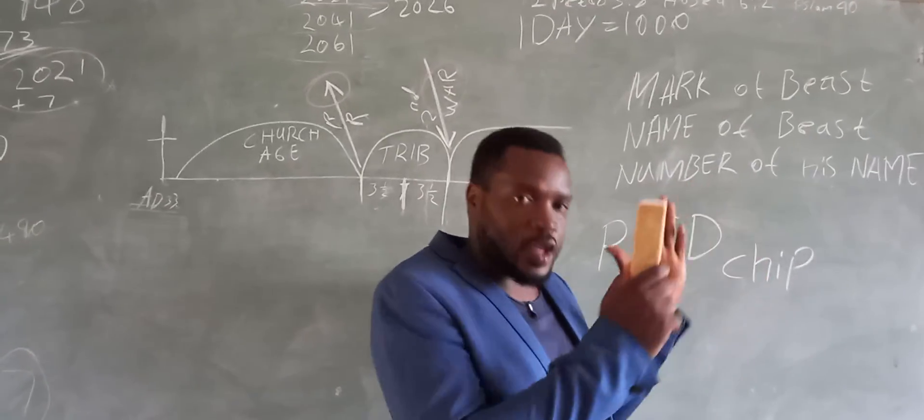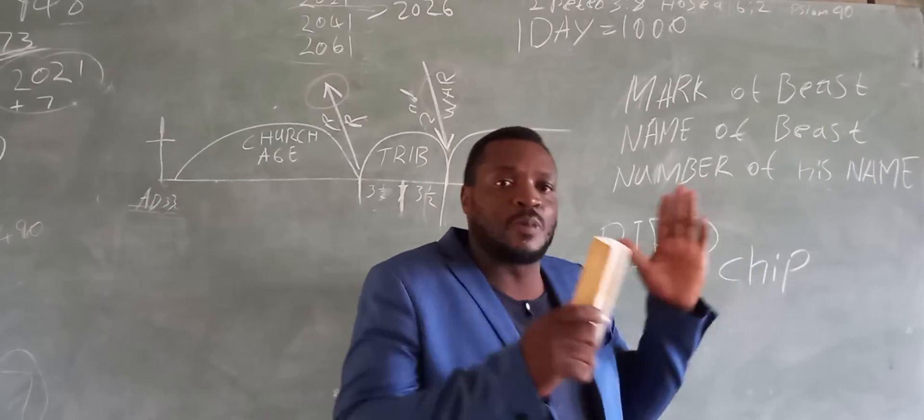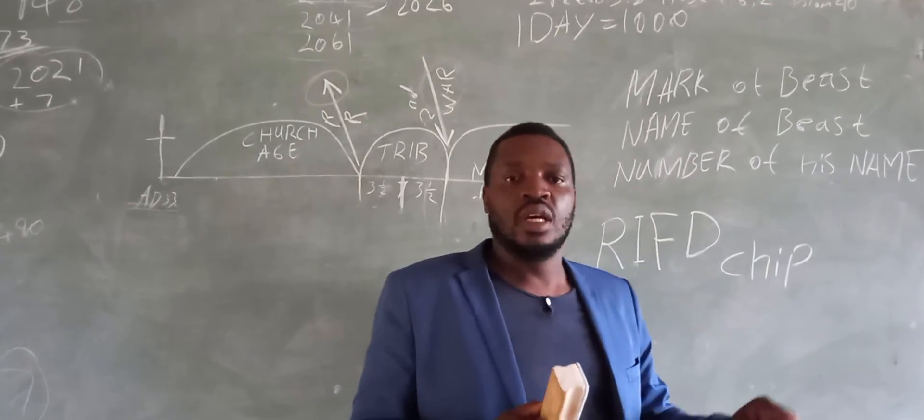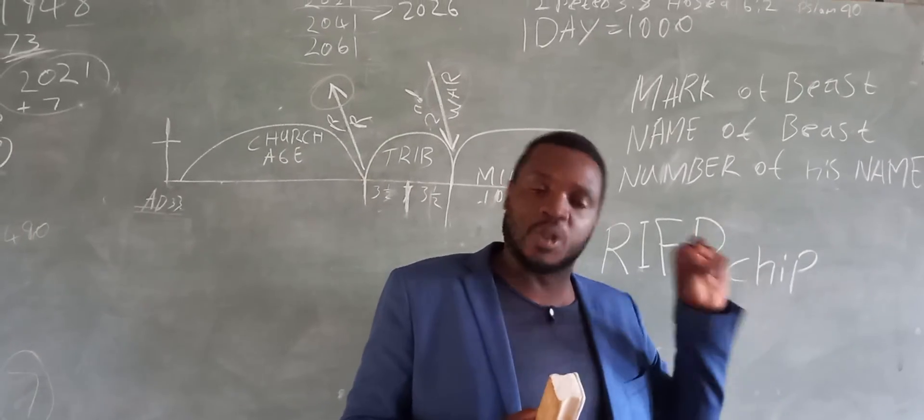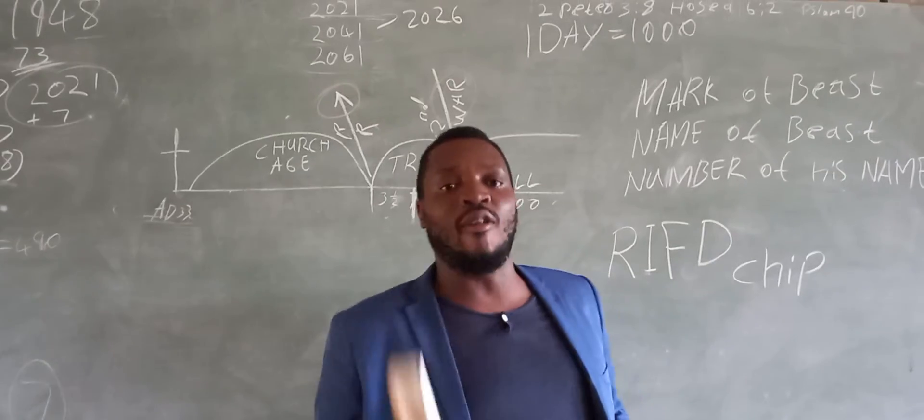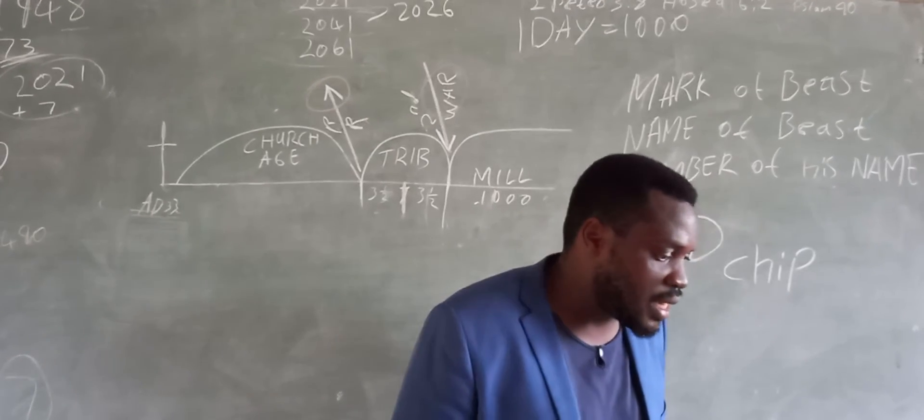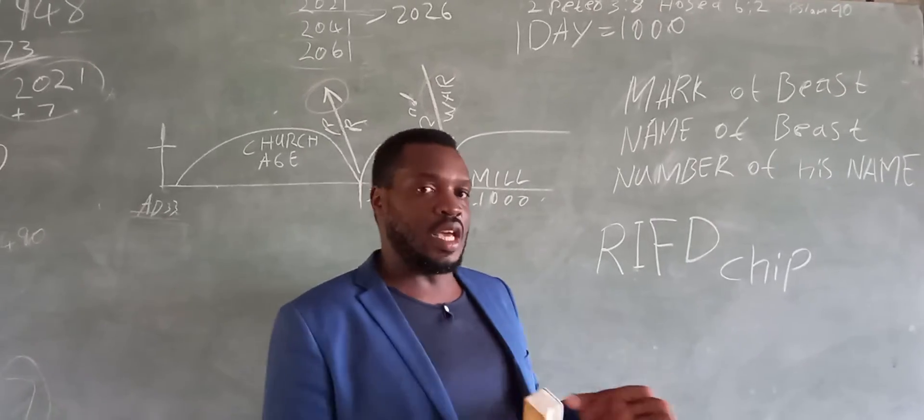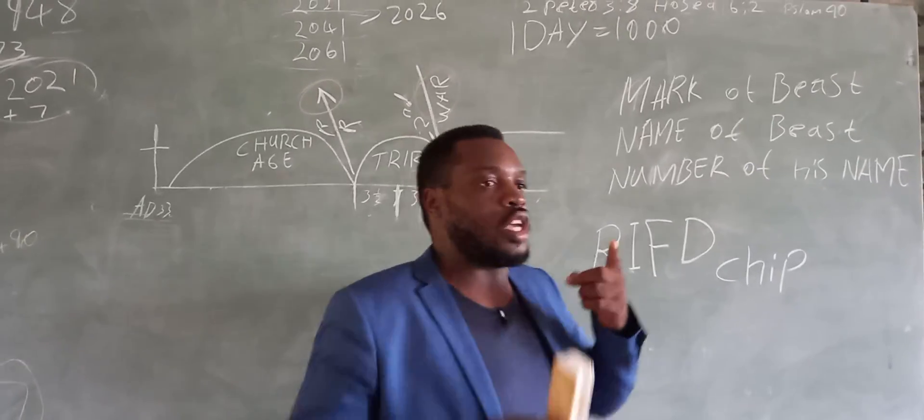The reference there talks of the first beast which was wounded. This beast was given power by the dragon, and the dragon is the devil or the spirit of Satan. When you read from verse 11, you hear of another beast rising out of the earth.